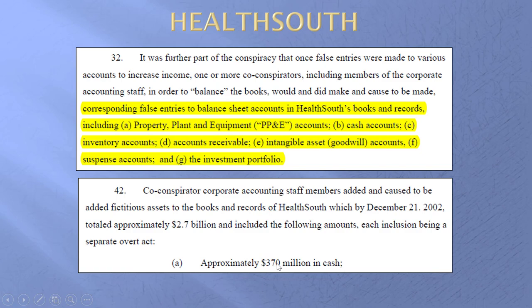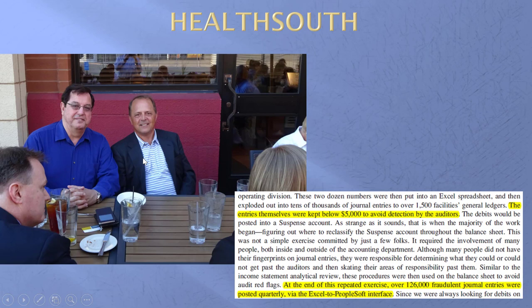And the audit report was unqualified. This is myself and Weston Smith, the CFO who started it, in Minnesota, probably four years ago. We go back to Chapter 4 where we talk about the entries kept below $5,000 to avoid detection — 126,000 fraudulent journal entries per quarter. If we annualize that, it's half a million fraudulent journal entries per year. And indeed, this fraud, as the next one, was carried out through journal entries.